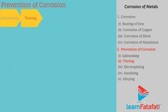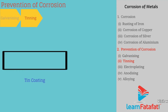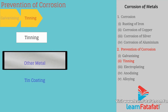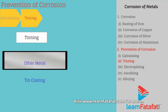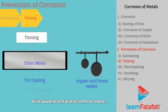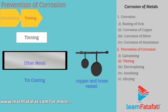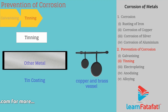Tinning: The process of giving a thin coating of tin to another metal is called tinning. Cooking vessels made of copper and brass are given a coating of tin to prevent corrosion.